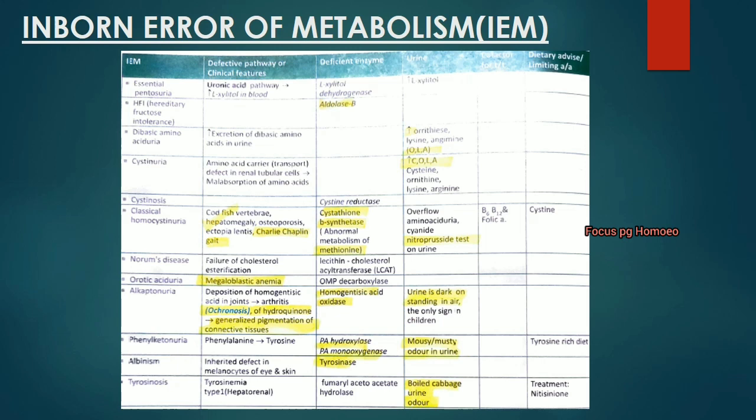Essential pentosurea: the patient presents with increased L-xylulose in blood and urine. The deficient enzyme is L-xylulose dehydrogenase. Hereditary fructose intolerance: the deficient enzyme is aldolase B. Dibasic aminoaciduria: there is increased excretion of dibasic amino acids — ornithine, lysine and arginine — in the urine.